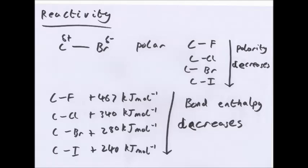Now, bond enthalpy. Here is just a number of bond enthalpies for CF bonds, CCL, CBR, and CI. And bond enthalpy decreases. Now, you'll see why this is important a bit later on the next slide.